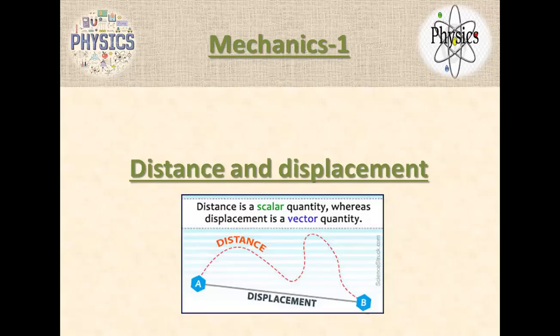As we already discussed distance and displacement — what do you understand? Displacement is a vector and distance is a scalar. The definition of displacement: what is it? What else differentiates them?